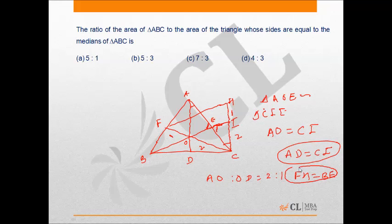It can be seen that triangle CFS is the triangle whose sides are medians of triangle ABC. So we have to find the ratio of the area of triangle ABC to triangle CFS.